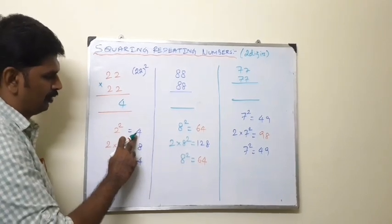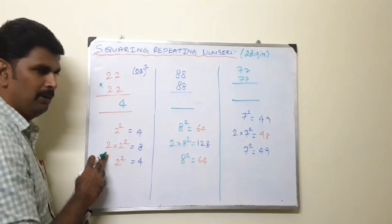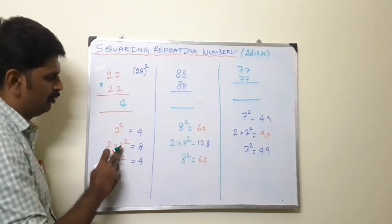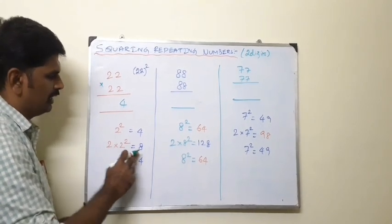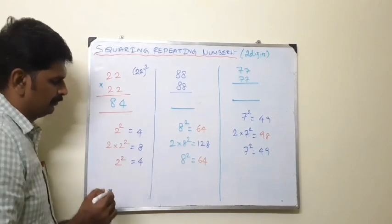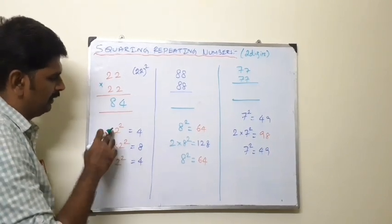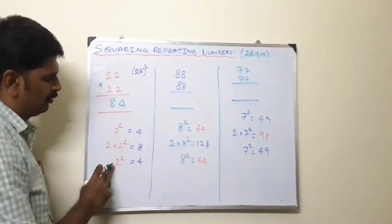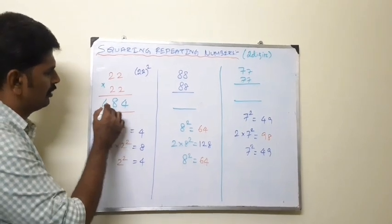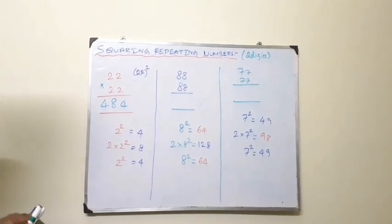So we have 4, then 8, and then 4. Finally we have to write the answer as 484. This is the result of 22 squared.